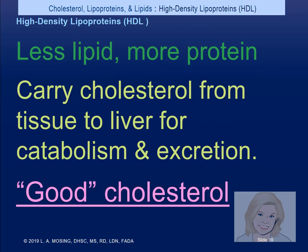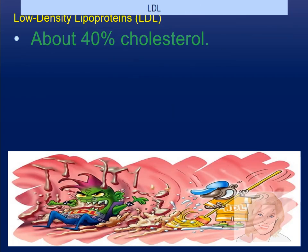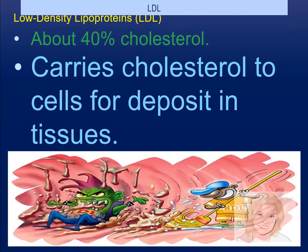What do we want more of? High-density lipoproteins. They're less lipid, more protein — and this has nothing to do with dietary protein. They carry cholesterol from the tissue to the liver for breakdown and excretion. We consider them the good cholesterol because even if someone had a lousy diet, if we get them to make changes we know we can reverse a lot of the damage. Ideally, we want to see HDL greater than 60.